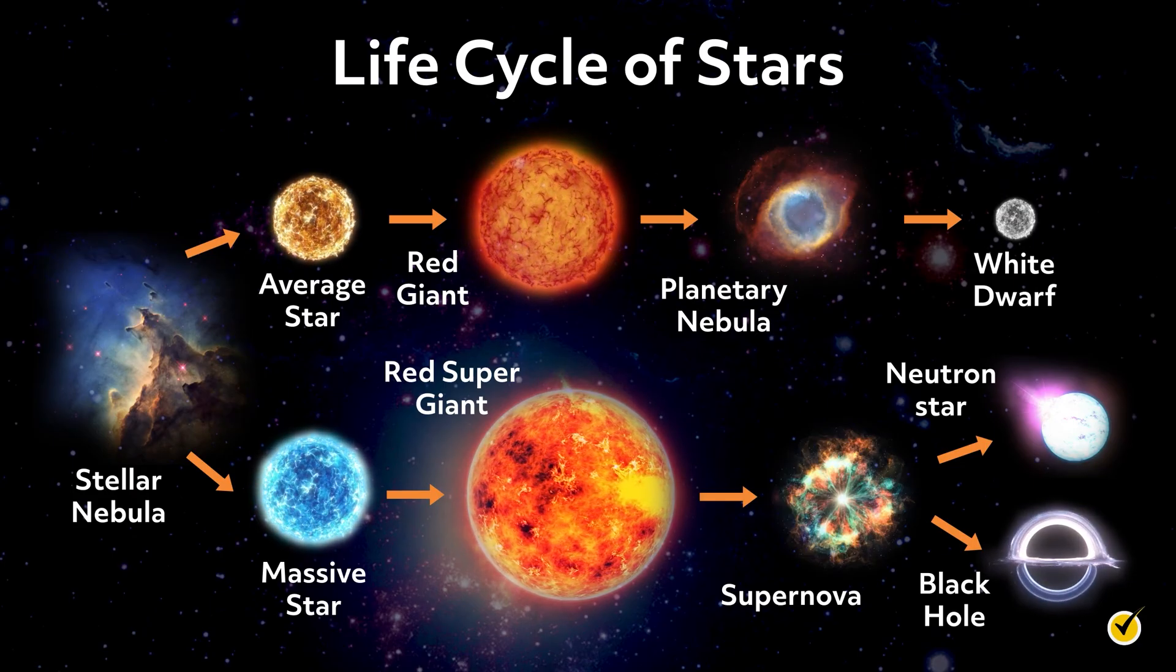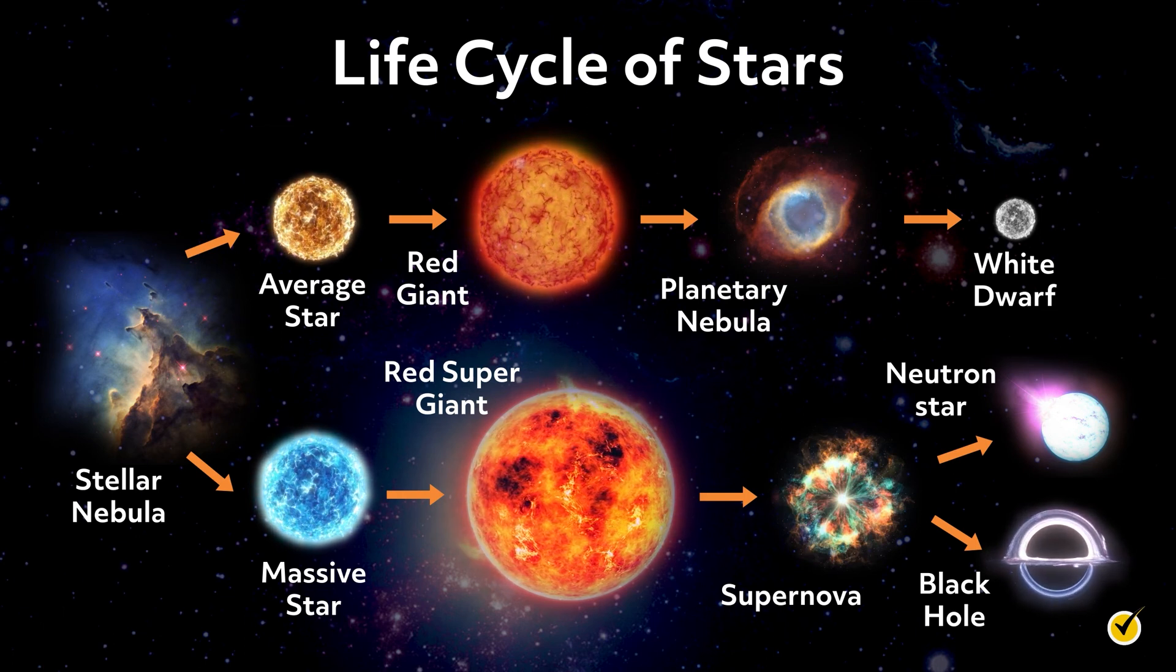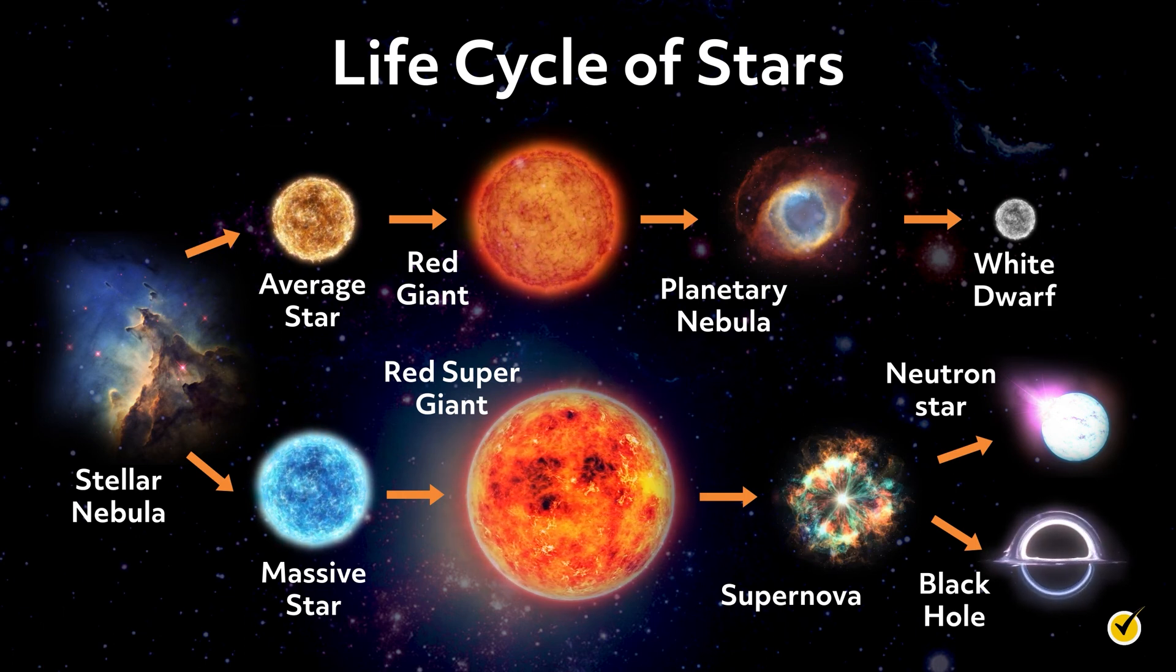A large star turns into a red supergiant. Then it creates a supernova explosion, leaving behind either a neutron star, which might be a pulsar, or a black hole.